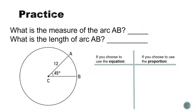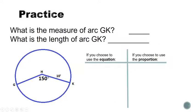Let's try another one. Let's ask ourselves what's the measure of arc GK and then what's the length of arc GK? Well the measure, that's the easy question. The measure is just in degrees. So the measure of the arc is going to be the same as its central angle. That's 150 degrees.